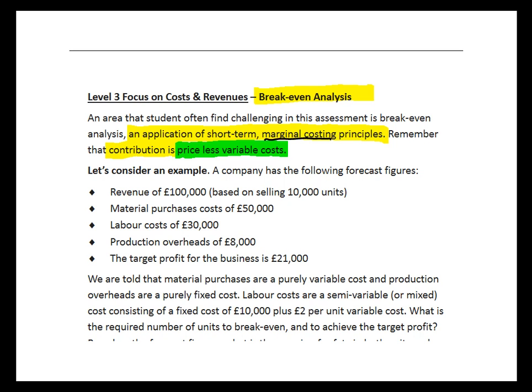Make sure you're comfortable with how we work out contribution. It's the selling price of our product less any variable costs of production. So if our selling price was £10 and our variable costs of production were £7, our contribution per unit would be £3. Contribution is your price less your variable costs. When we're doing short-term decision making, such as break-even analysis, we use contribution theory under marginal costing. If you are looking at short-term decision making — how many units to produce tomorrow, or which product to produce tomorrow — that's not going to affect fixed costs like rent. Your landlord doesn't care how many units you produce; they're still going to charge you the same rent. So in the short-term, fixed costs tend to be the same and can kind of be ignored. It's only really when we're looking at longer-term decision making that we would normally incorporate fixed costs into our analysis.